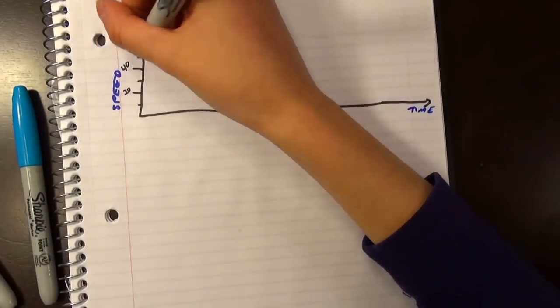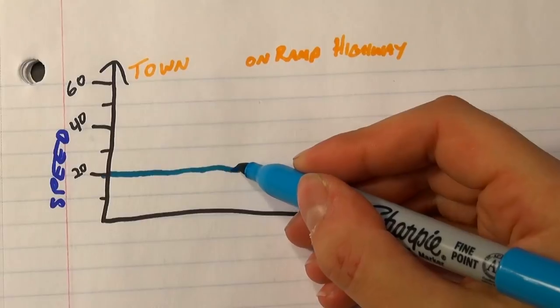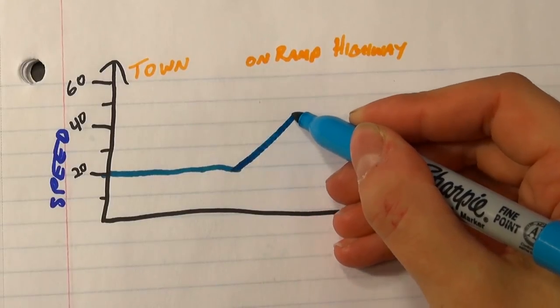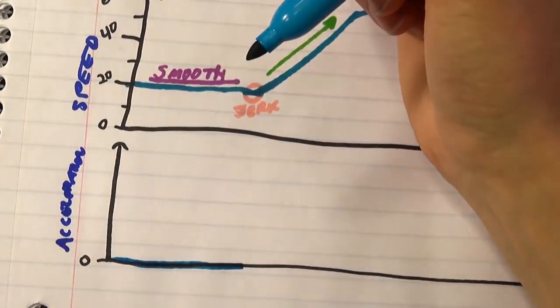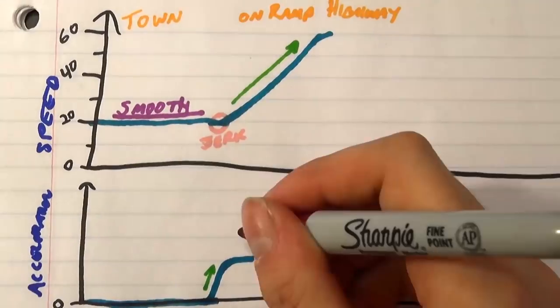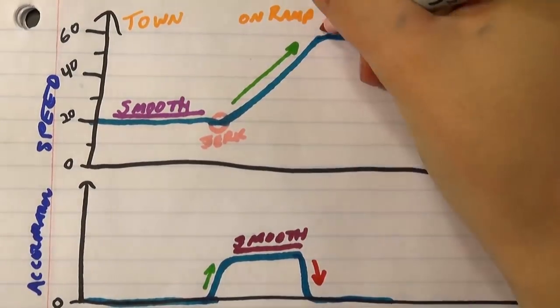Say you're driving at a steady constant 20 miles per hour through town, and then you hit the highway and suddenly floor it into a smooth acceleration. You'll feel some amount of jerk during that change from no acceleration to positive acceleration, and then if you suddenly stop accelerating because you're up to highway speed, there will be another little jerk.